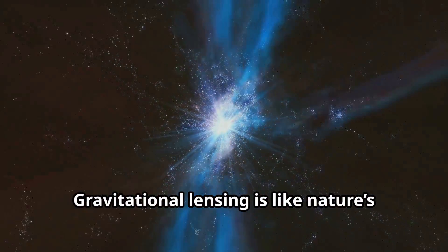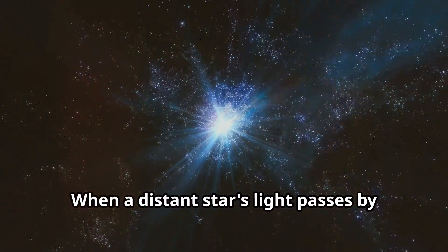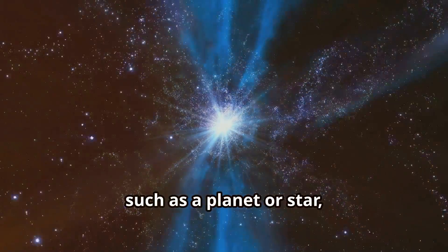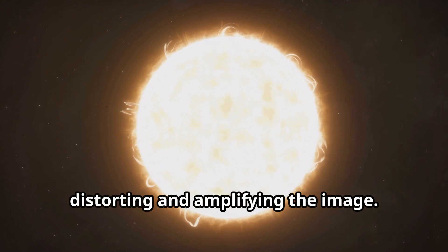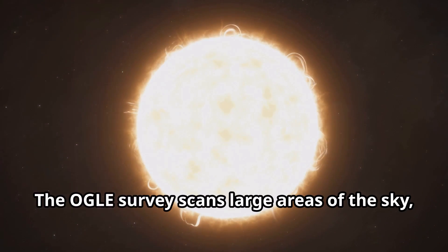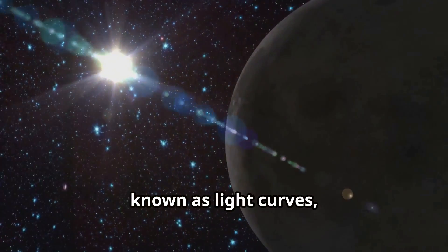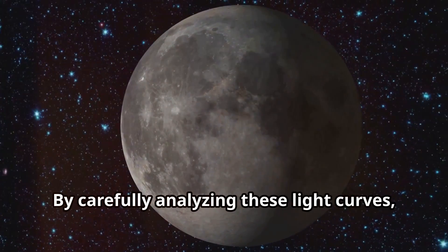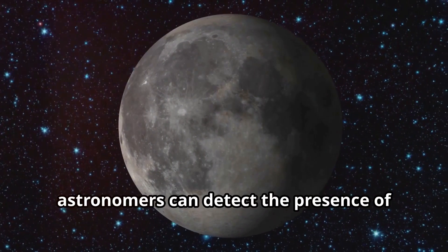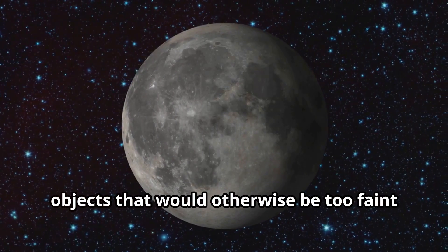Gravitational lensing is like nature's magnifying glass. When a distant star's light passes by another object, such as a planet or star, the gravity of that object bends the light, distorting and amplifying the image. The OGLE survey scans large areas of the sky searching for these tell-tale distortions known as light curves, which indicate that something interesting is happening. By carefully analyzing these light curves, astronomers can detect the presence of objects that would otherwise be too faint to see, including tiny stars like OGLE TR-122.